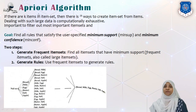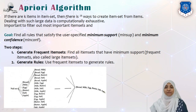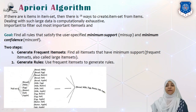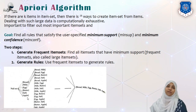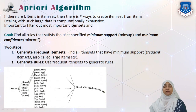The algorithm we use is called the A Priori algorithm for association rules. If there are K items in an item set, there are 2 raised to K possible ways to create an item set. For example, in our transactional data set there are six items: bread, milk, egg, butter, salt, and apple. Out of these six we can generate 2 raised to 6, that is 64 combinations in total.